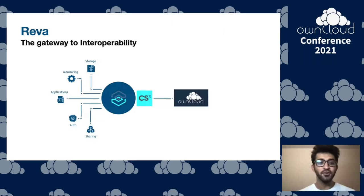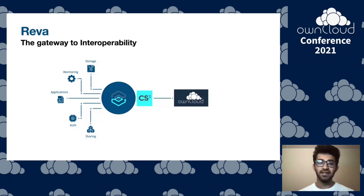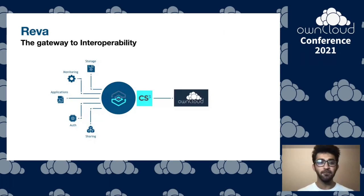Reva looks to solve these issues by providing an interoperable middleware to which ownCloud connects seamlessly. It has driver implementations for various functionalities such as storage backends, authentication mechanisms, file sharing, and applications. Adding new ones is as simple as just implementing that particular interface. These functionalities are in turn exposed by a set of universal APIs called CS3 APIs. We've been running Reva in production for the last three years where it supports 30,000 users.